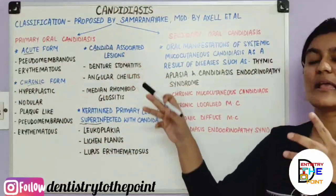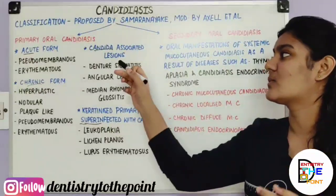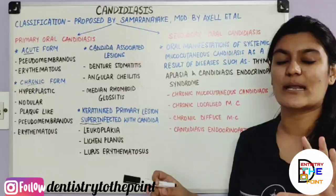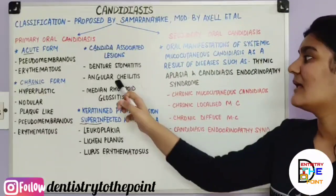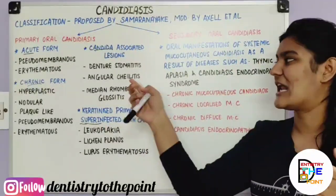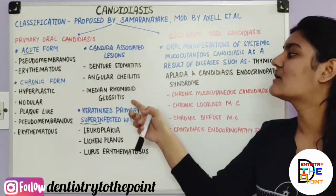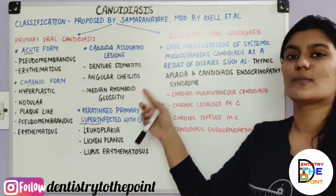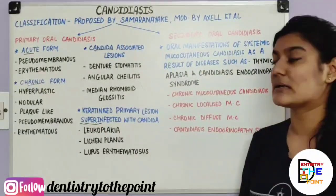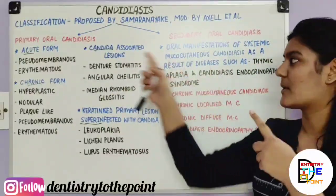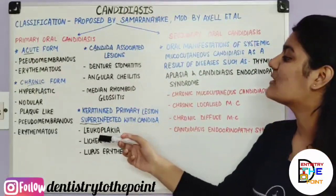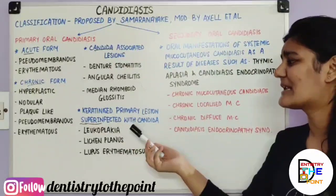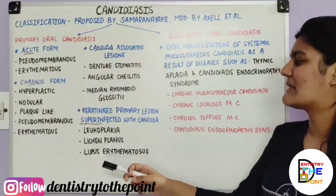In the Candida-associated lesions group, since Candida is associated with surrounding structures, the three forms are: denture stomatitis (involving the palate), angular cheilitis (involving the corners of the mouth and lips), and median rhomboid glossitis (involving the tongue) — which has already been discussed in developmental anomalies of the tongue. The keratinized primary lesions superinfected with Candida include leukoplakia, lichen planus, and leukokeratosis — these are white-appearing lesions already present and infected with Candida.